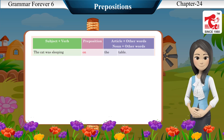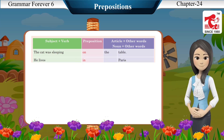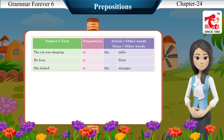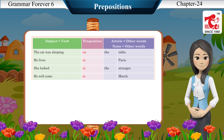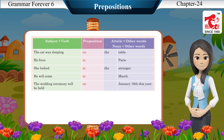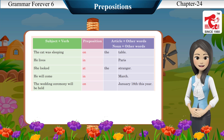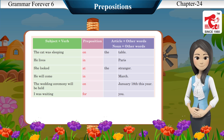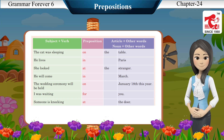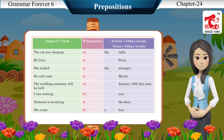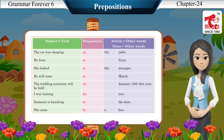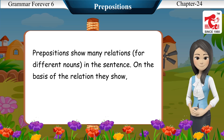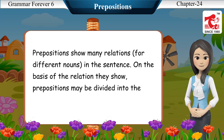Example sentences: The cat was sleeping on the table. He lives in Paris. She looked at the stranger. He will come in March. The wedding ceremony will be held on 18th January this year. I was waiting for you. Someone is knocking at the door. She came by a bus. Prepositions show many relations; on the basis of the relation they show, prepositions may be divided into categories.